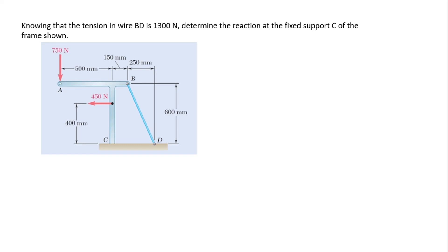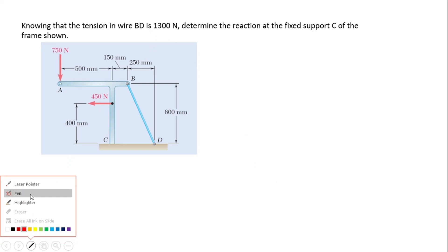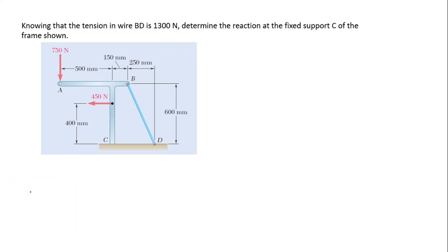The question is: knowing the tension in wire BD to be 1300 newtons, determine the reaction at the fixed support C of the frame shown. So this is the tension BD — 1300 newtons — and we are supposed to determine the reaction at the fixed support C.